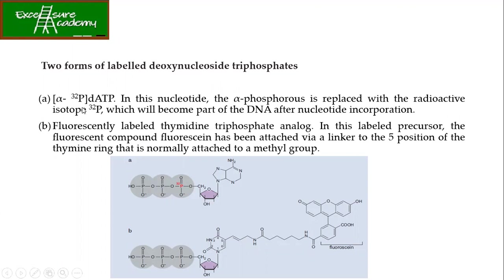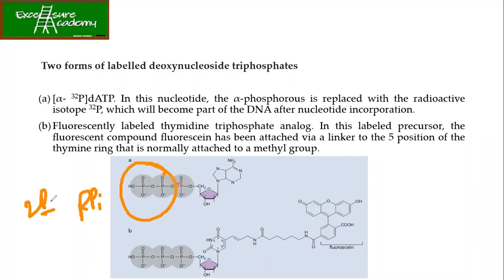Either you can have alpha-P32 dATP, where the alpha phosphorus is replaced with the radioactive isotope. Iska matlab kya hoga — jaisa jaisa apka DNA synthesized hota jayega, vaise vaise the radioactivity of the newly synthesized DNA will also be increasing. Kyunki beta and gamma — which is the pyrophosphate — woh release ho jayega. What gets incorporated and forms the phosphodiester bond in DNA synthesis is your alpha phosphate. So if you label this, jitna zyada apka DNA synthesize hoga, utna zyada uski intensity badhegi.